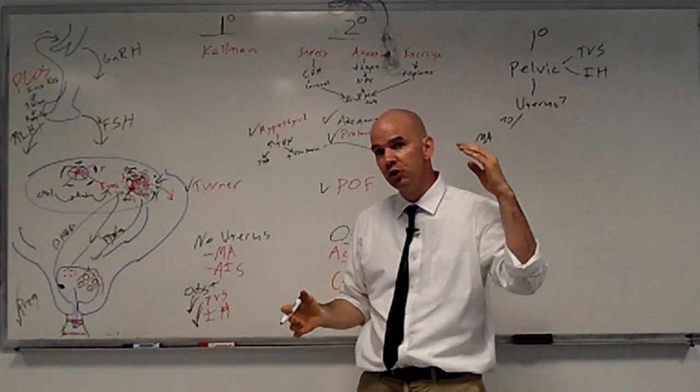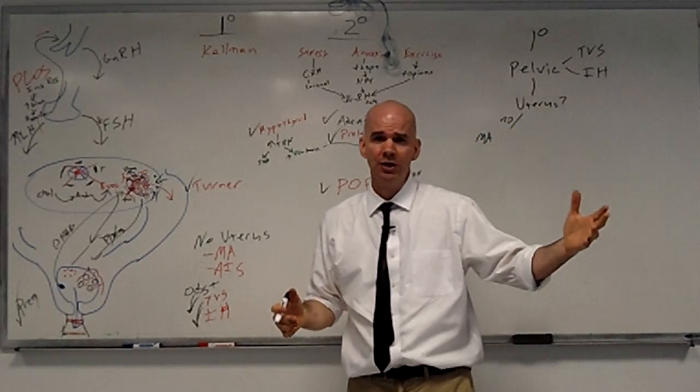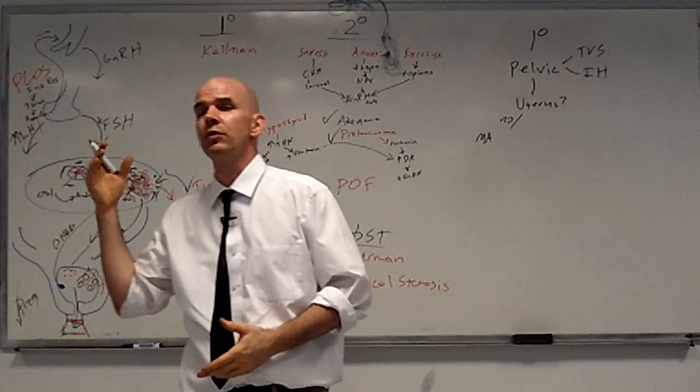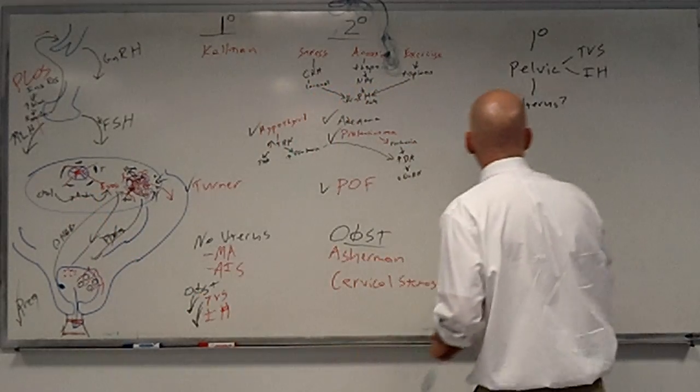You could do a karyotype to figure out which one it is. If the karyotype shows XX, you know it's Mullerian agenesis. If the karyotype shows XY, then you know it's probably androgen insensitivity syndrome.